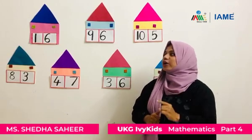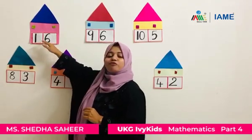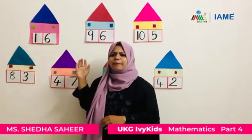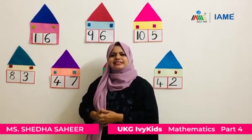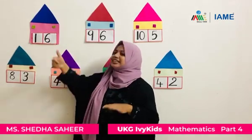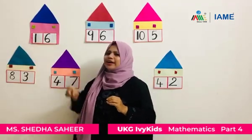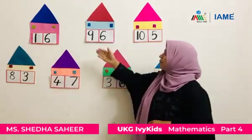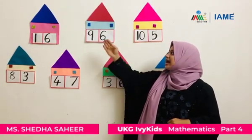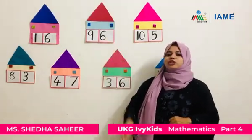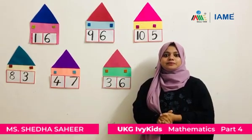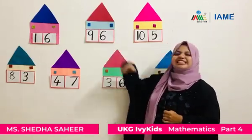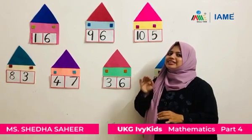Are you ready? Let's find out which number is big and which number is small in this house. Tell me which number is the biggest one. Six is the biggest number in this house. What about one? One is the smallest number compared to six. Now let's compare these two numbers — we have nine and six. Six is the smallest number.